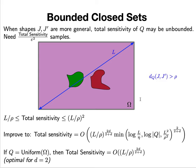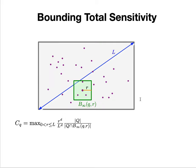Another thing we can say is if the initial Q set is uniform over this domain, then the total sensitivity is L/ρ·2^(d/2+d), which in two dimensions is exactly L/ρ, which is optimal.